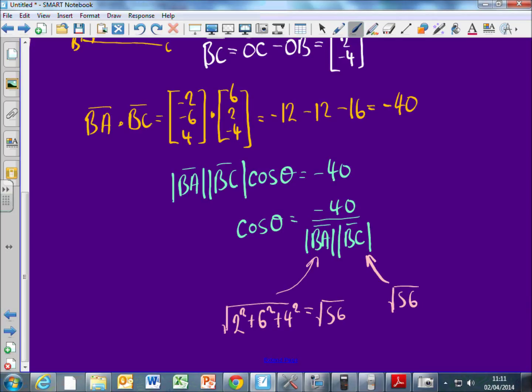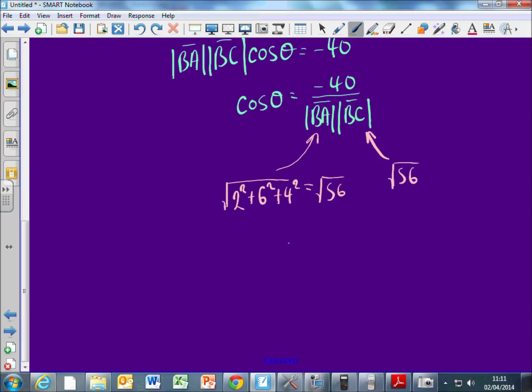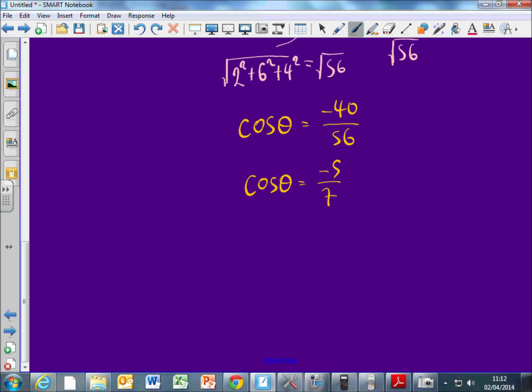So if I multiply them together, that's just 56, isn't it? So cos theta, the angle between the two, should be minus 40 over 56. I'm guessing this simplifies down to, it was minus 5 over 7. And so theta equals cos to the minus 1 of minus 5 over 7. How's that? Who managed to do that? Very good.